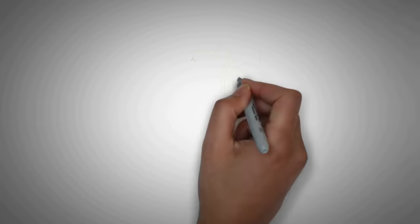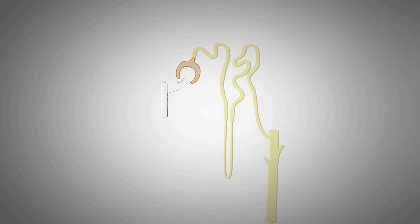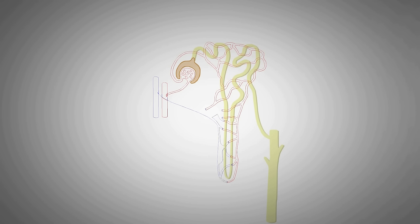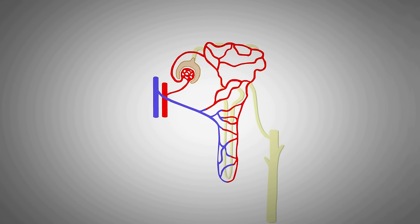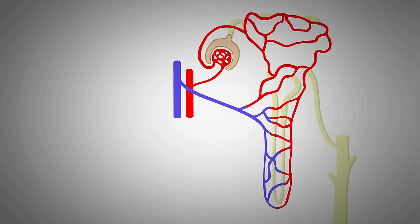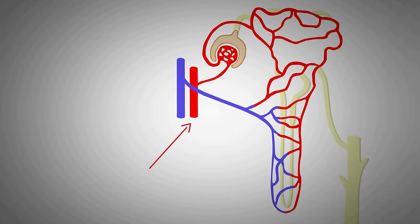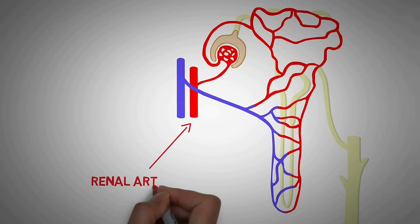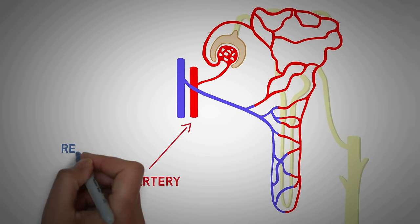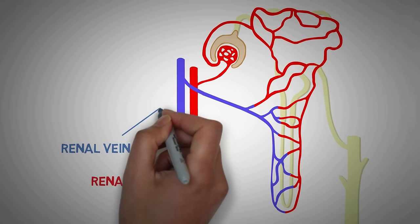Along the whole length of the nephron runs a network of small blood vessels known as peritubular capillaries, which bring in impure blood containing waste metabolic products and take out pure filtered blood. The impure arterial blood comes into the kidney via the renal artery, and the filtered blood goes back to the body via the renal vein.